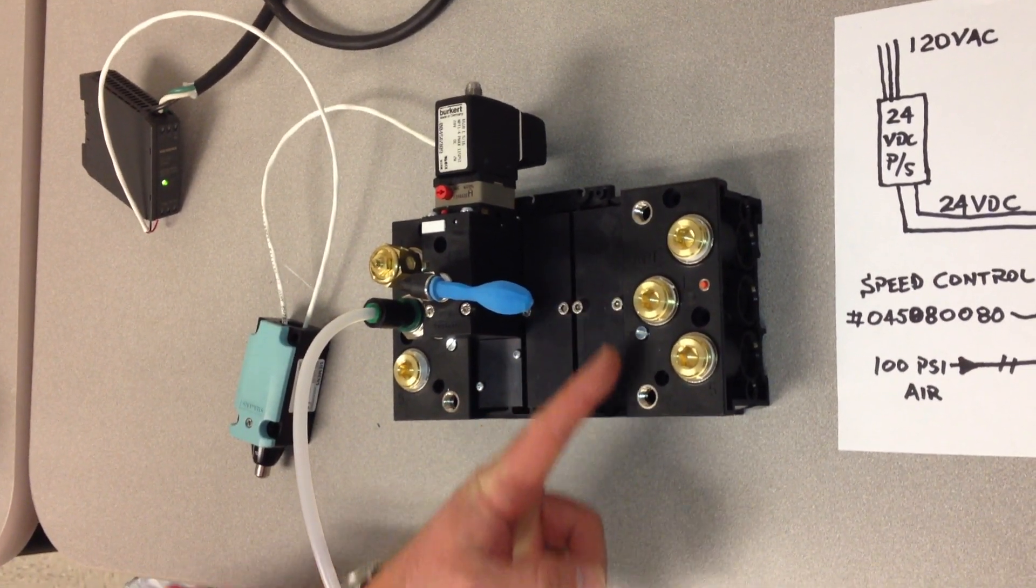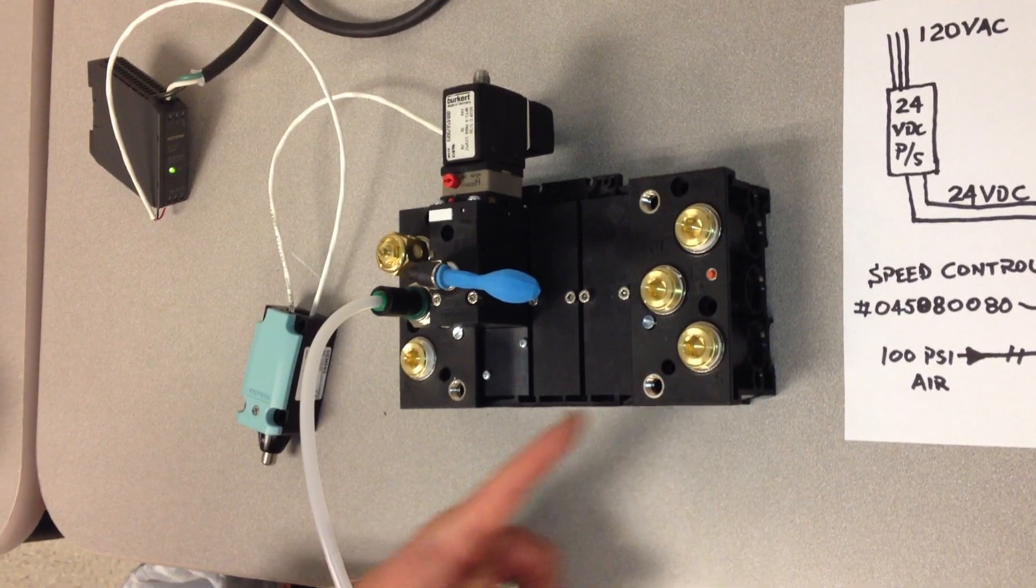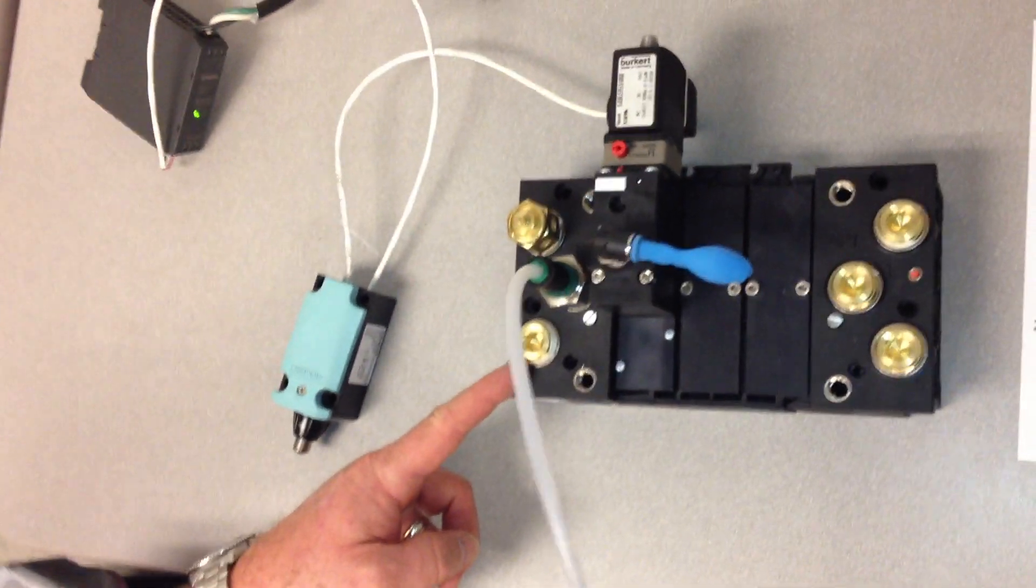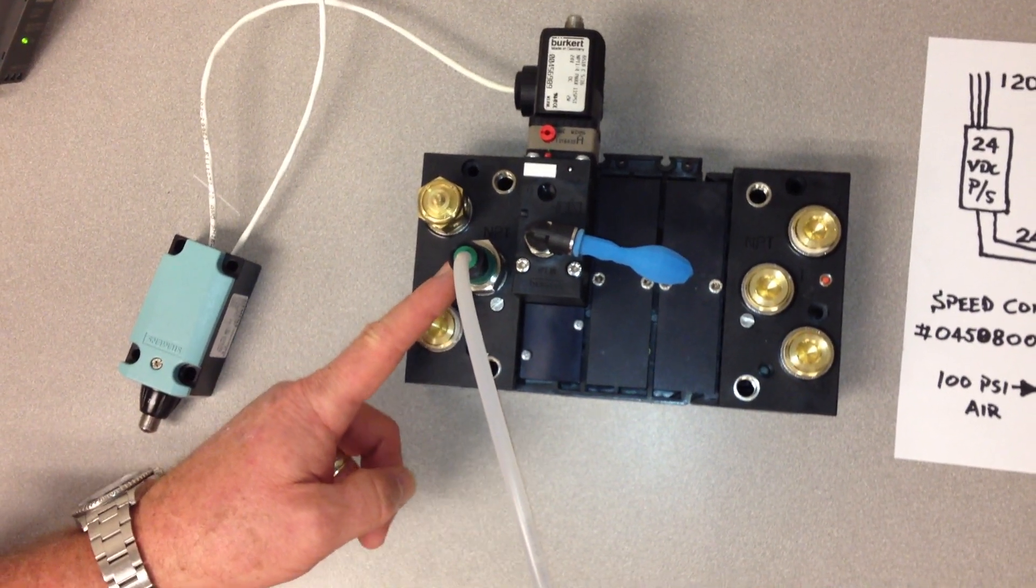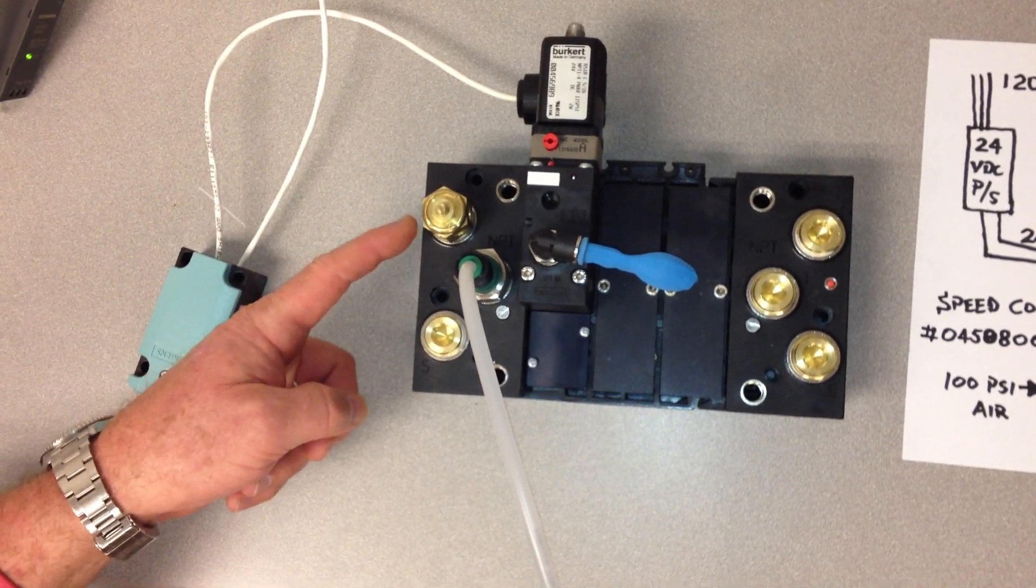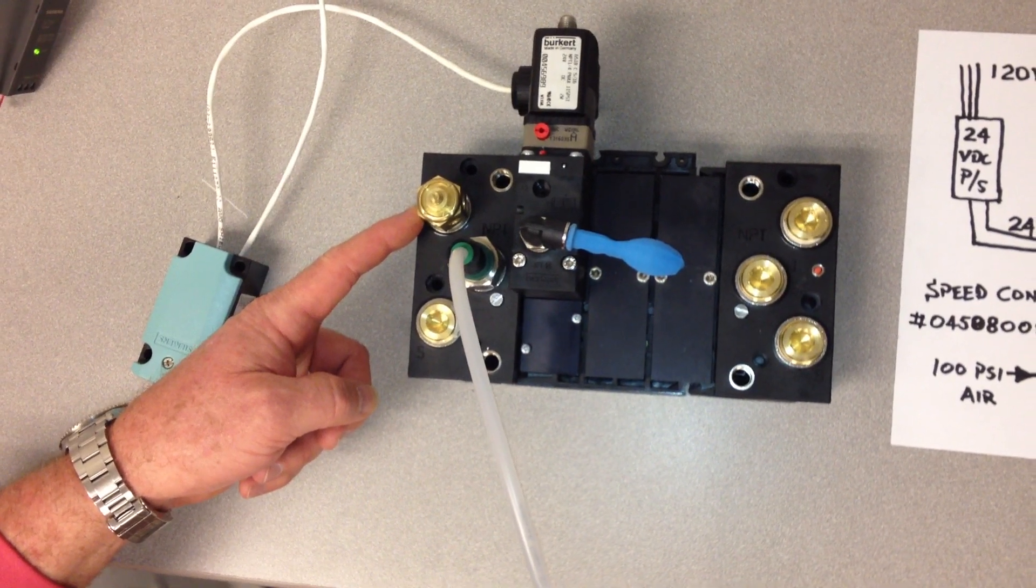Ports three, one, and five are plugged over here. Port five is plugged over here. Port one is our plant air coming in. And port three has the speed control, which has been adjusted.